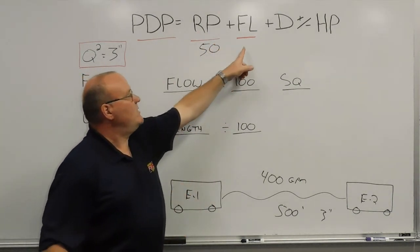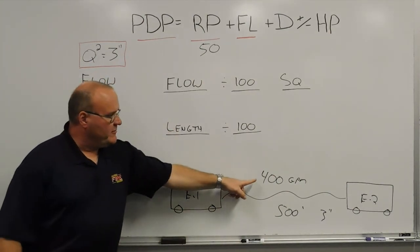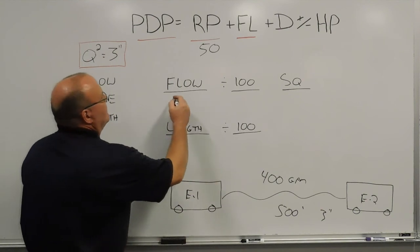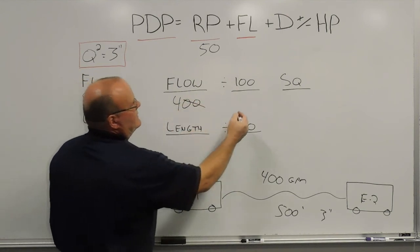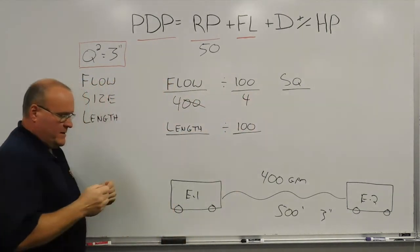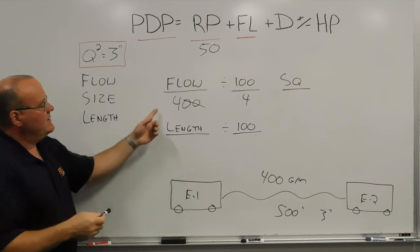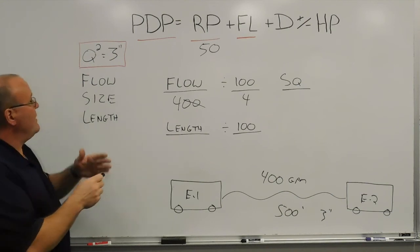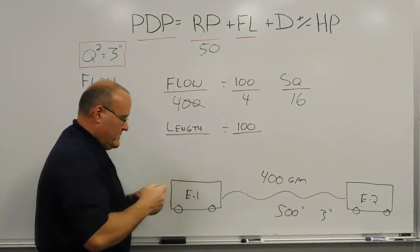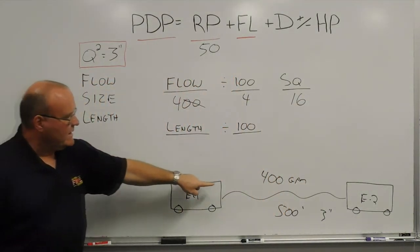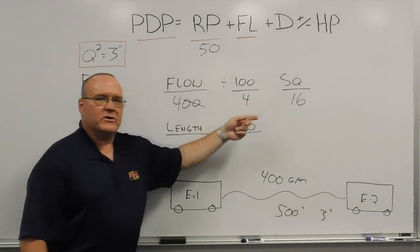The first step: we take our gallon-per-minute flow and divide by 100 — essentially knocking the zeros off — giving us 4. Using our hand method: 100, 200, 300, 400 gallons a minute. Knock the zeros off: 4. 4 times 4 to square it is 16. That tells us that for 400 gallons a minute through 3-inch hose, there are 16 pounds of friction loss for every 100 feet.